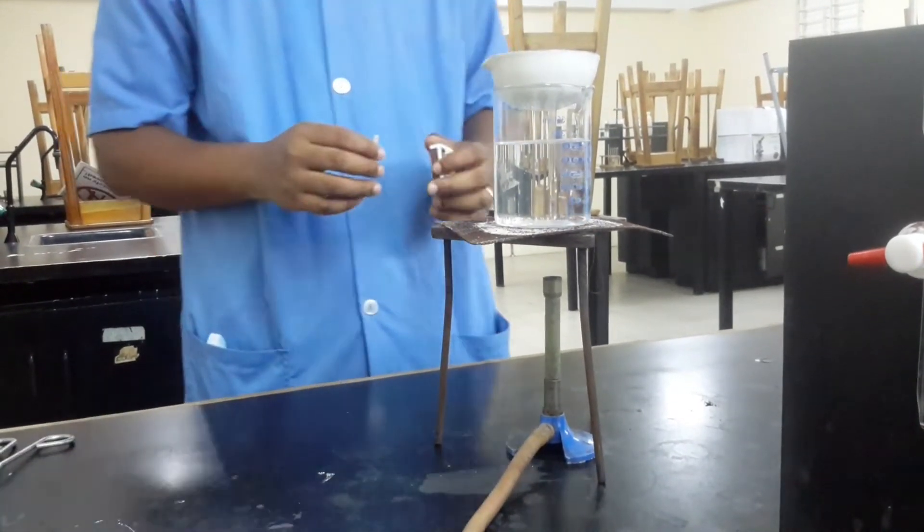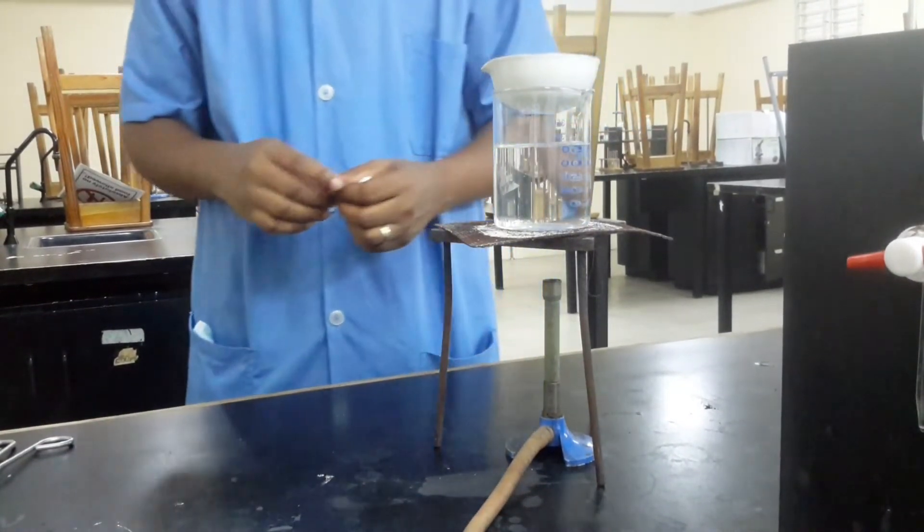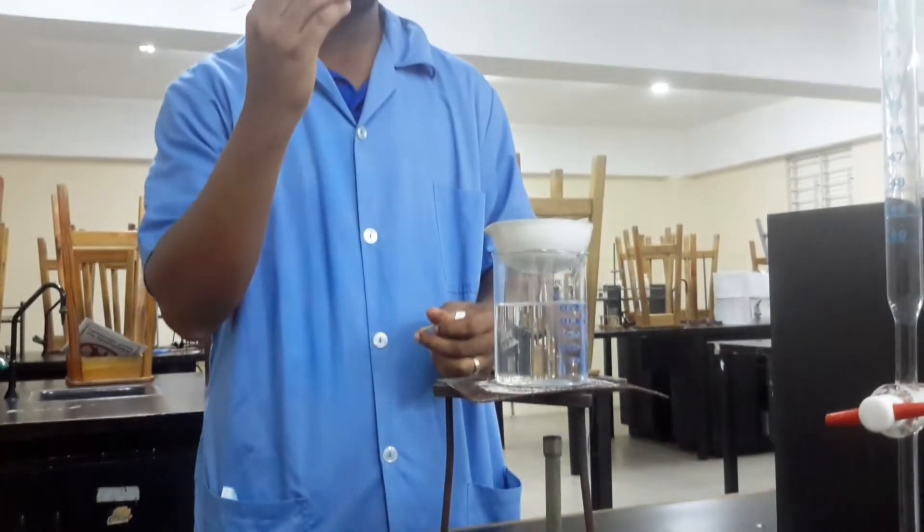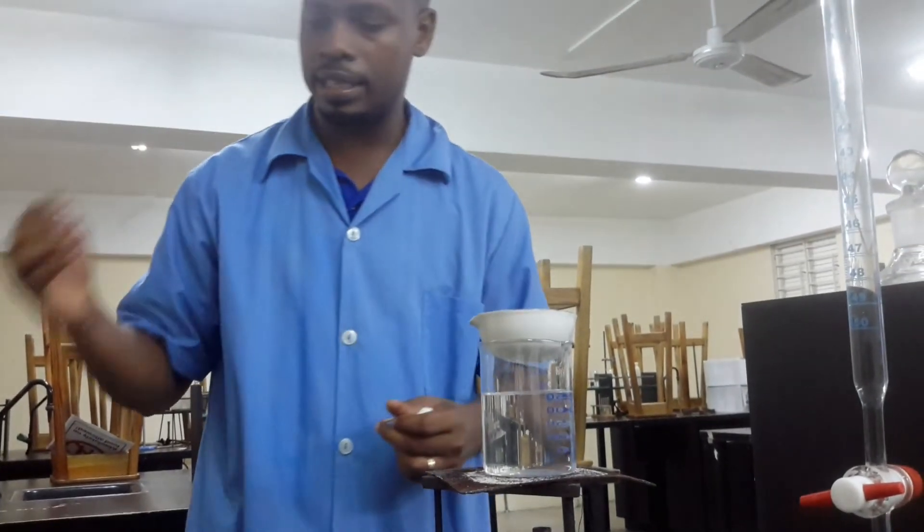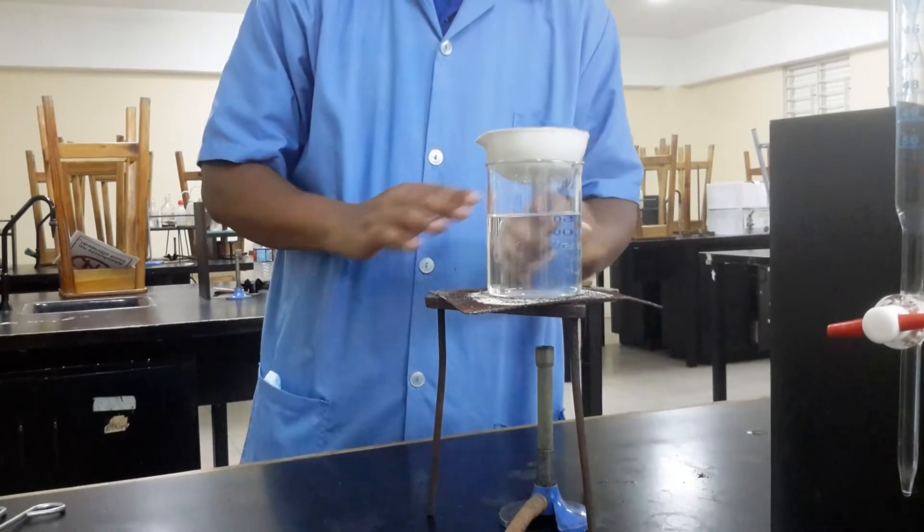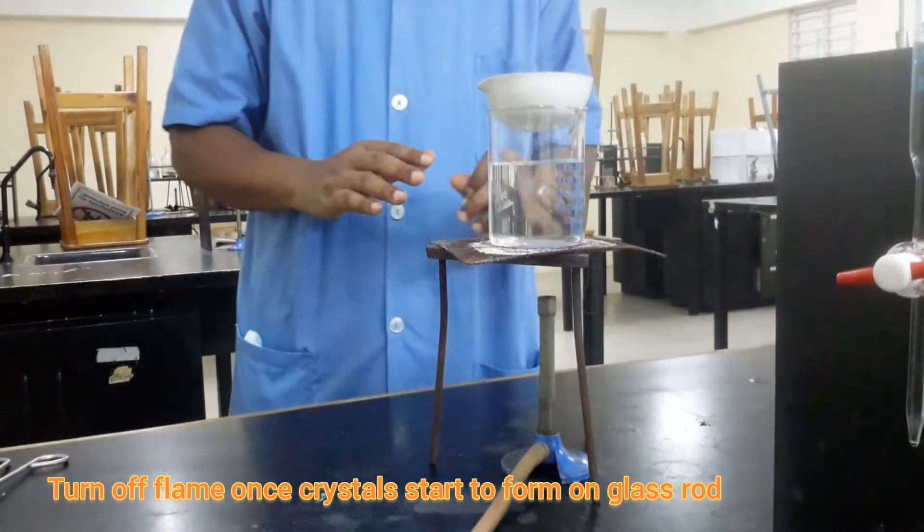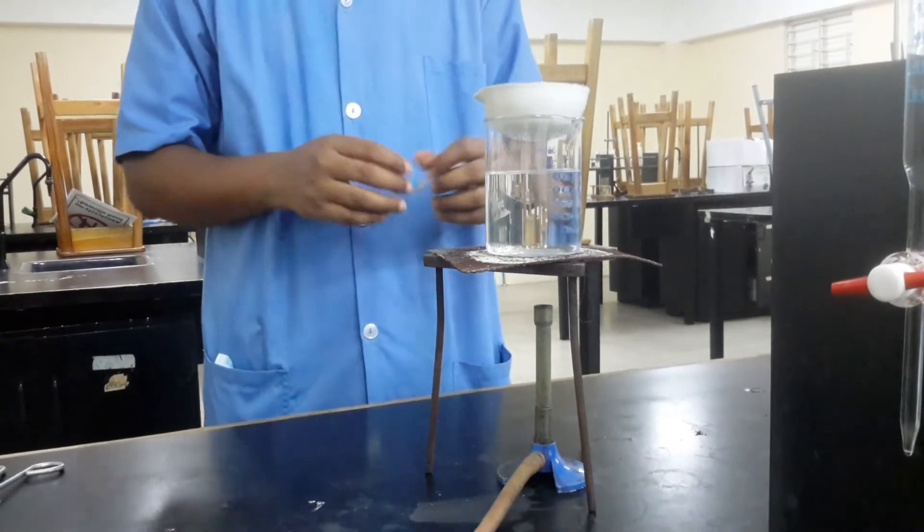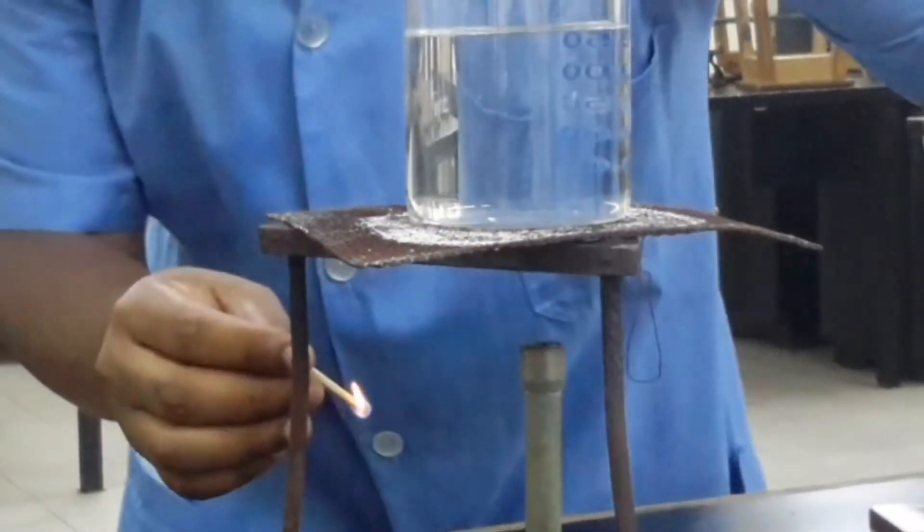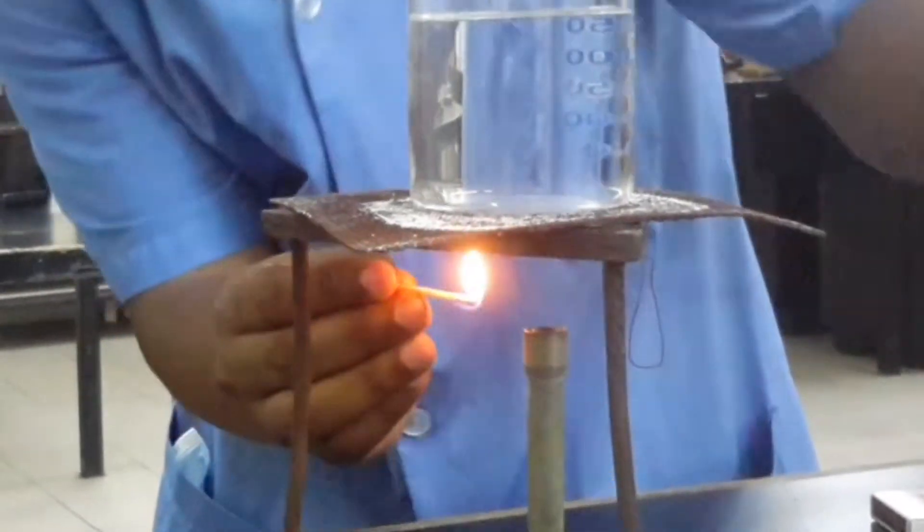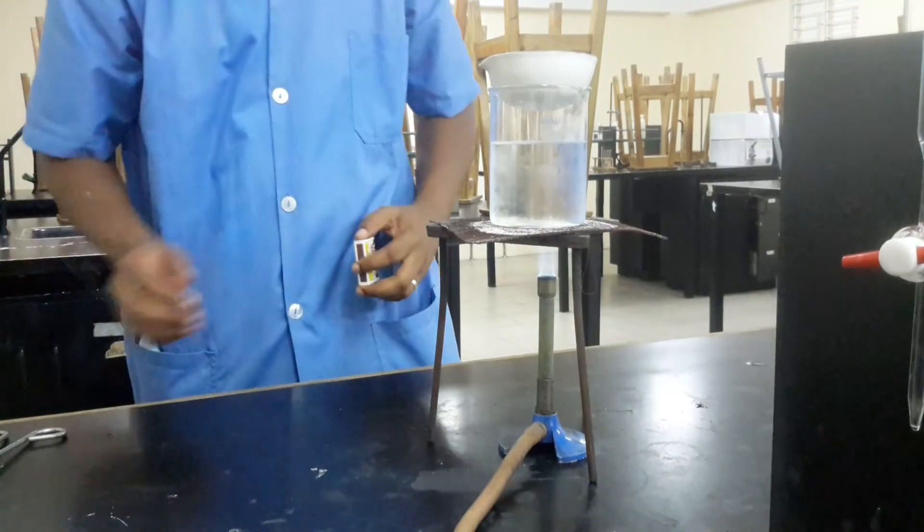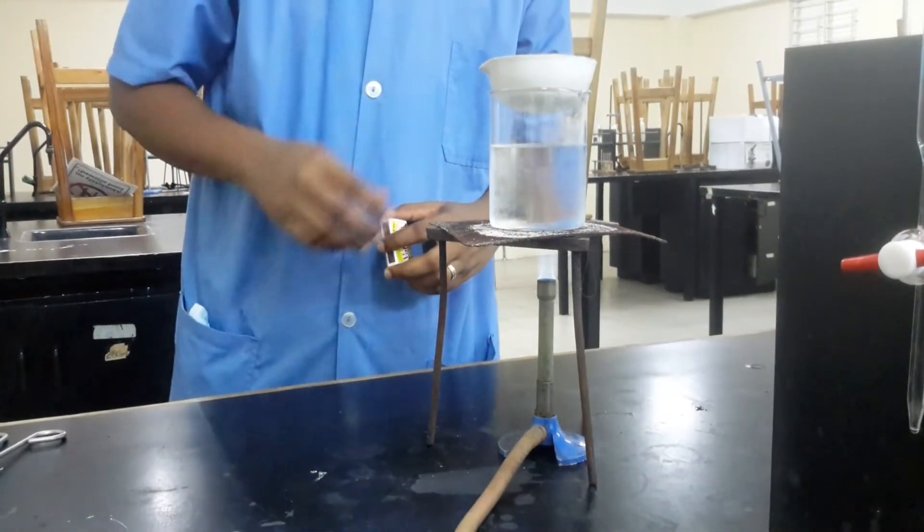We're going to be checking for crystallization along the way. We'll be using our glass rod, we'll be dipping our glass rod in it and let it come up when we take it up and look for crystallization. The moment we see crystallization, it means we can turn off the flame and we can just let it sit so the crystals can form. We'll just wait on the process.